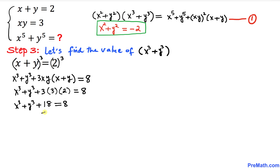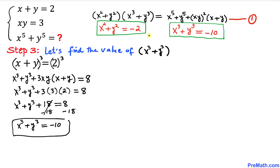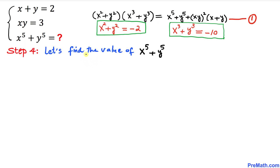Subtracting 18 from both sides, x cube plus y cube turns out to be negative 10. So we now have both values: x square plus y square equals negative 2, and x cube plus y cube equals negative 10.